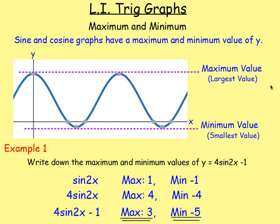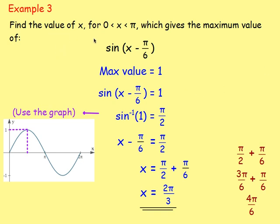We then looked at the maximum and minimum values. The maximum is the highest value, the minimum is the lowest value. We had to look at just the inner part — sine 2x — and think about what its maximum and minimum would be. Then we were multiplying that by 4, stretching it by 4, and subtracting 1 to get the final maximum and minimum. We also had examples where we had to work out the value of x which gave us the maximum, solving it similarly to a phase angle question.